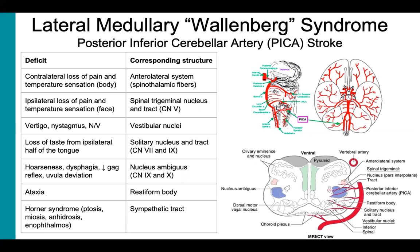Recall the body and facial deficits associated with MCA stroke were both localized to the same side — opposite sides should clue you in on the brainstem. Damage to the cranial nerve 8 vestibular nuclei gives us vertigo, nystagmus, and nausea and vomiting. A lesion to the solitary nucleus and tract, which contains fibers of cranial nerves 7 and 9, yields loss of taste to the half of the tongue ipsilateral to the lesion. Damage to the nucleus ambiguus, containing fibers of cranial nerves 9 and 10, gives us hoarseness, dysphagia, decreased gag reflex, and uvular deviation. Lesion to the restiform body results in ataxia.